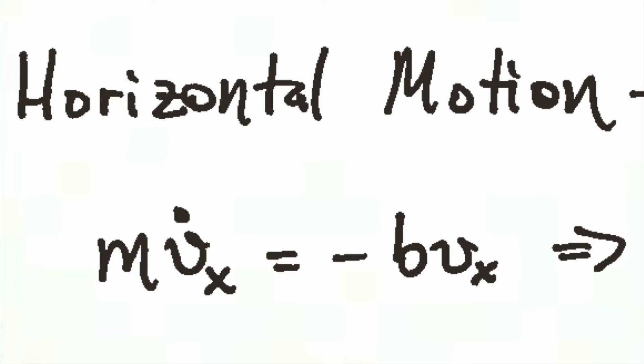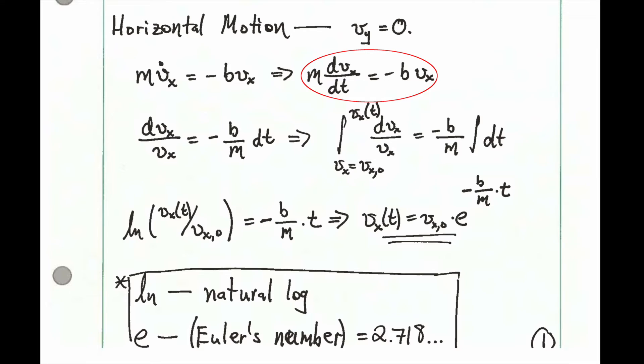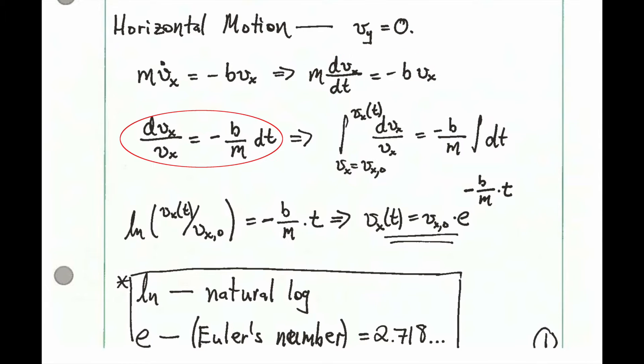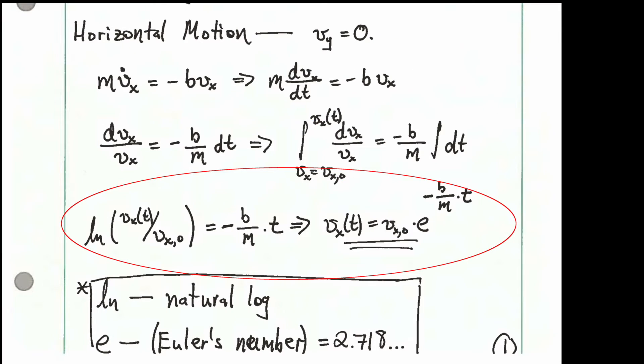The book starts with the simple case of horizontal motion. So now we have no motion along the y direction, and so we don't need to worry about the y component of the acceleration. We can rewrite this differential equation as the equation shown here. And then we can separate variables, velocity in the x direction on the left side, time on the right side, and we can integrate the differential equation, giving us the solution indicated here.